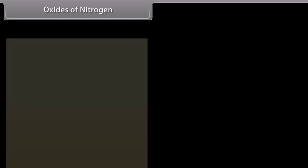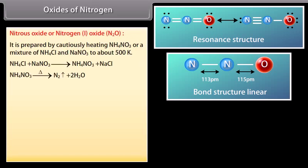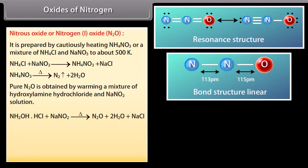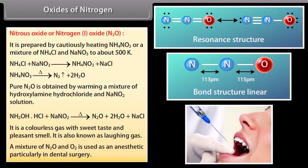Nitrogen forms a number of oxides in different oxidation states. Nitrous oxide (N2O, nitrogen 1 oxide) is prepared by cautiously heating NH4NO3 or a mixture of NH4Cl and NaNO3 to about 500 Kelvin. Pure N2O is obtained by warming a mixture of hydroxylamine hydrochloride and NaNO2 solution. It is a colorless gas with sweet taste and pleasant smell, also known as laughing gas. A mixture of N2O and O2 is used as an anesthetic, particularly in dental surgery.